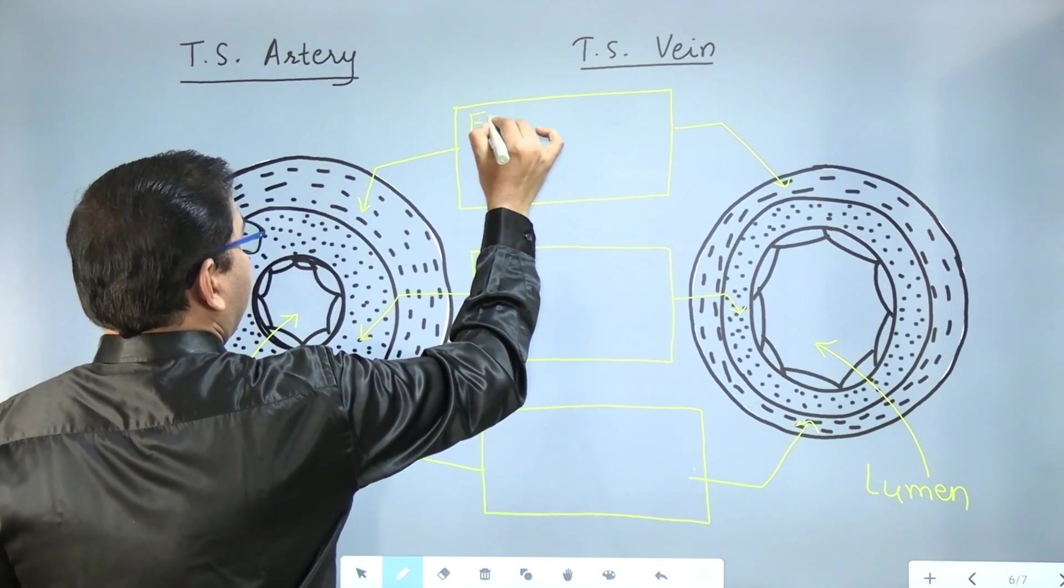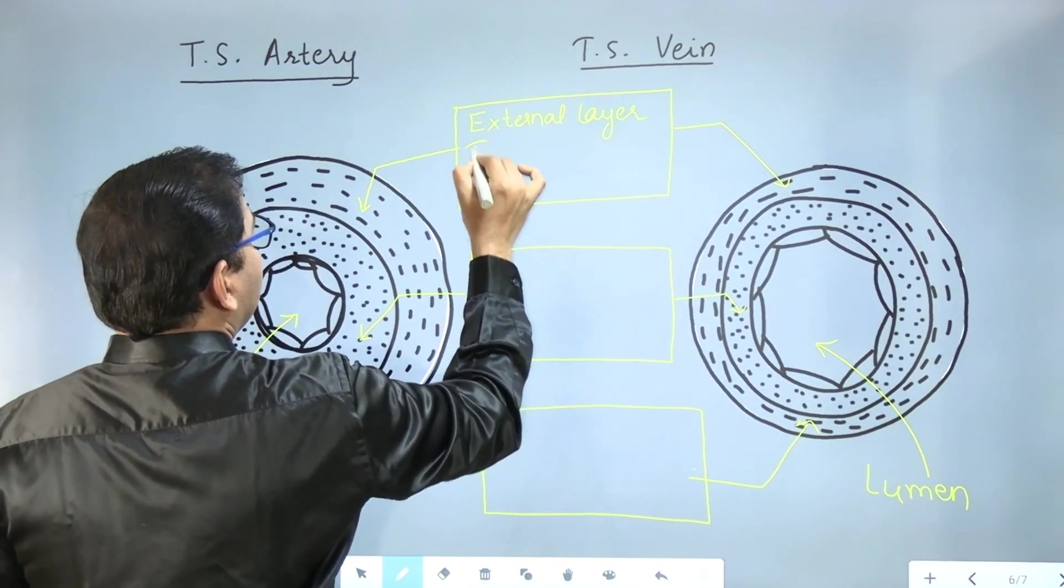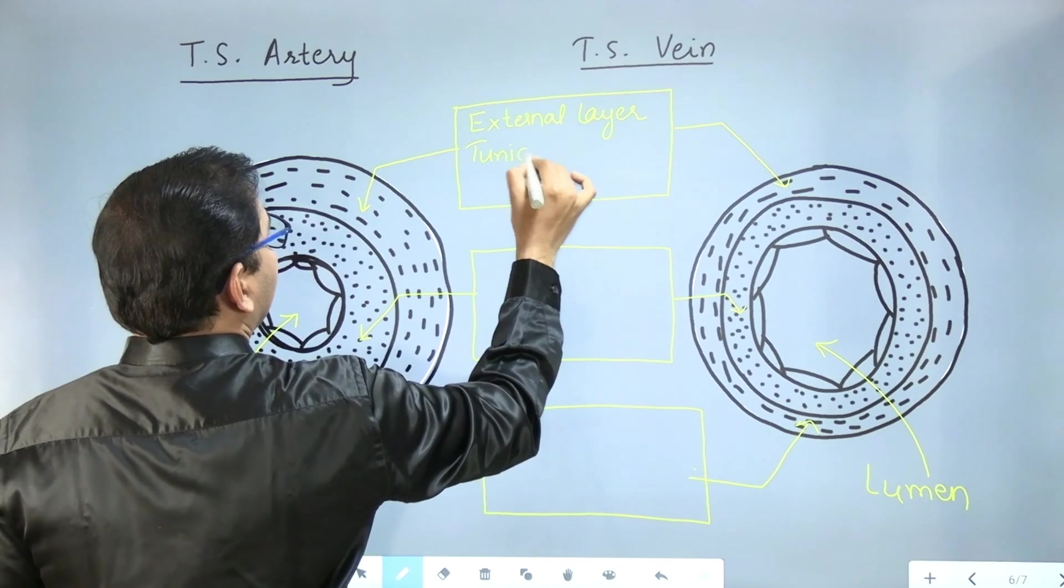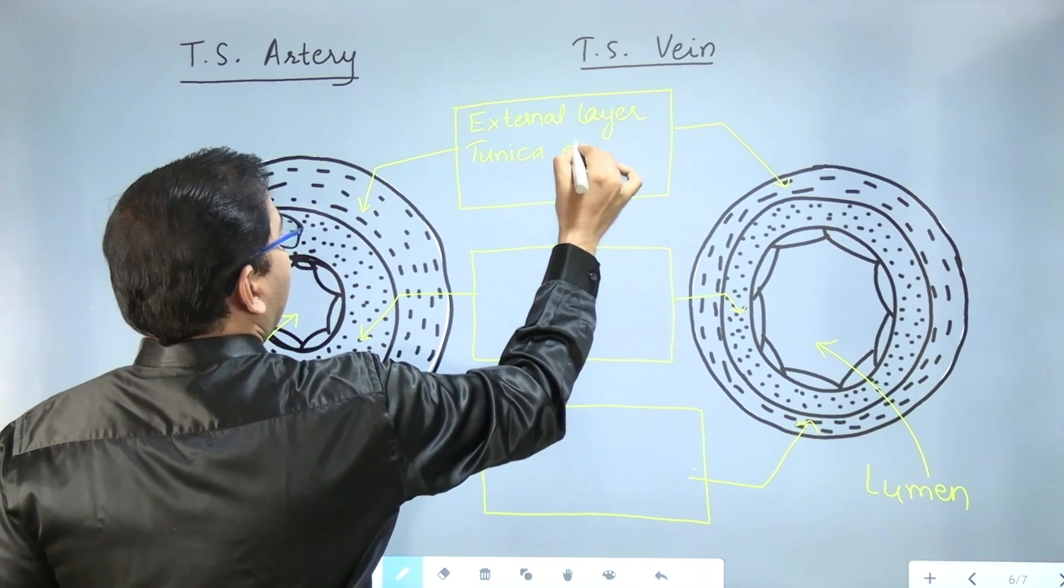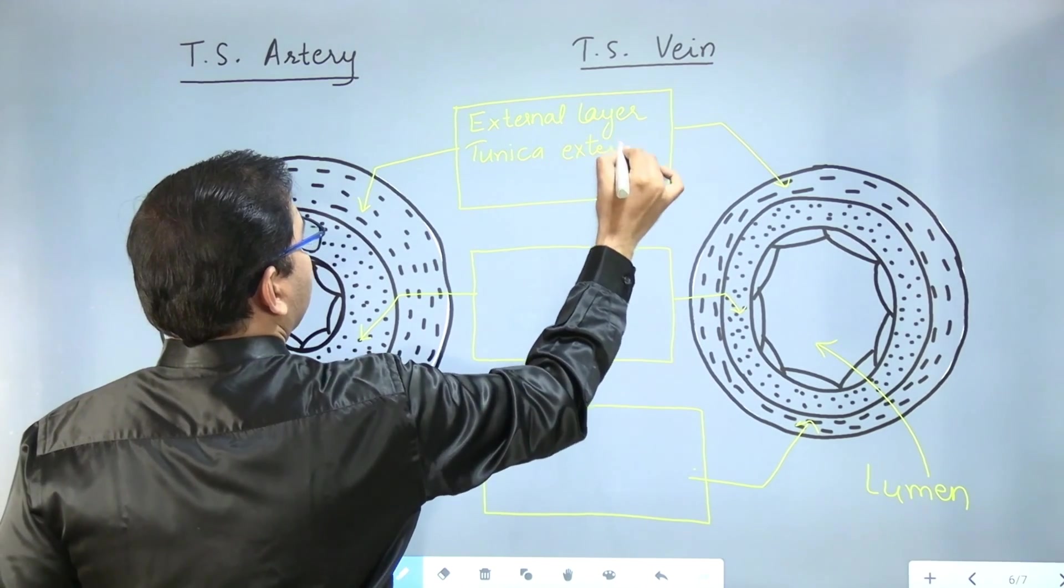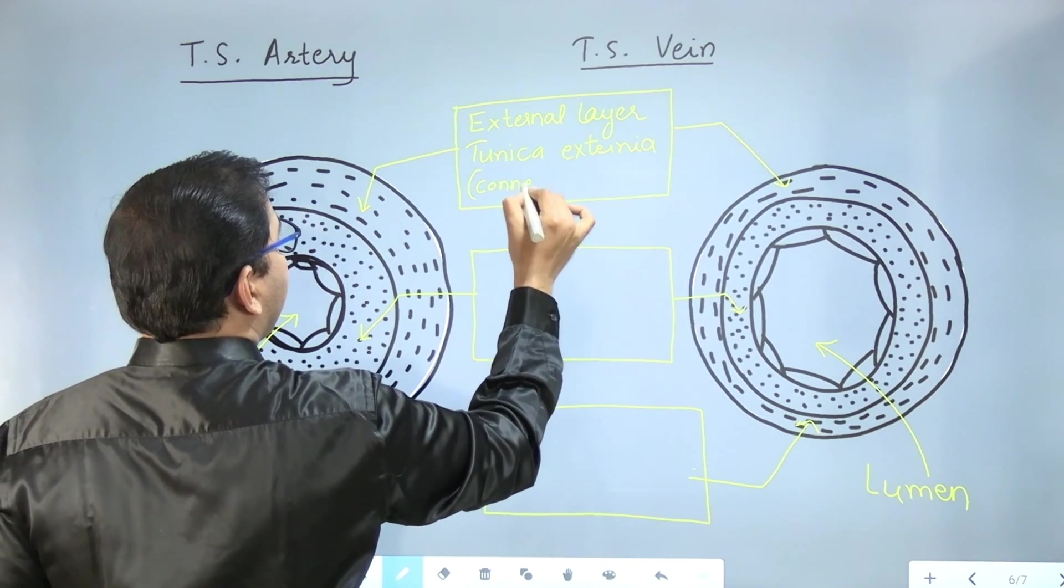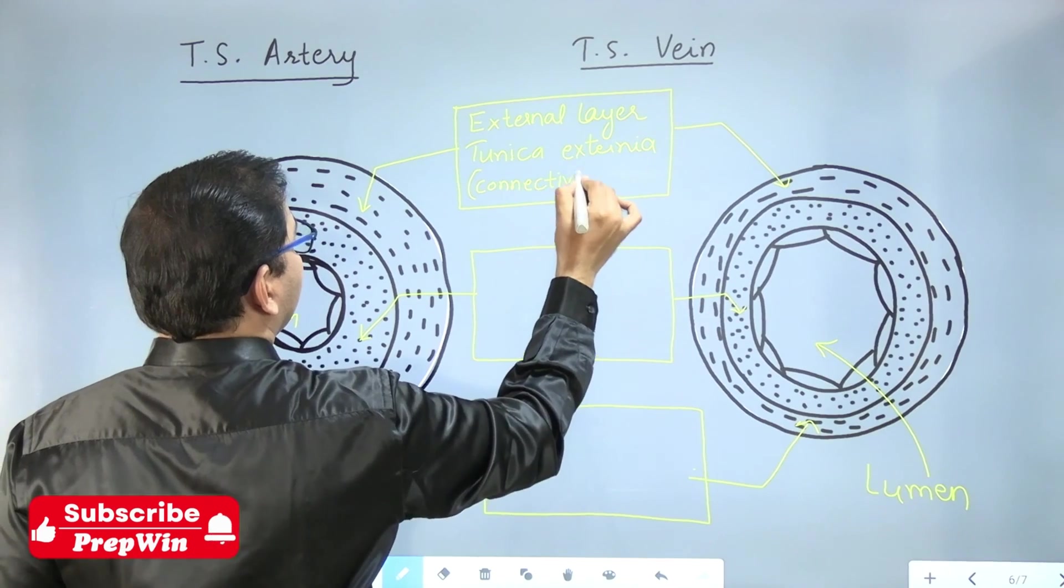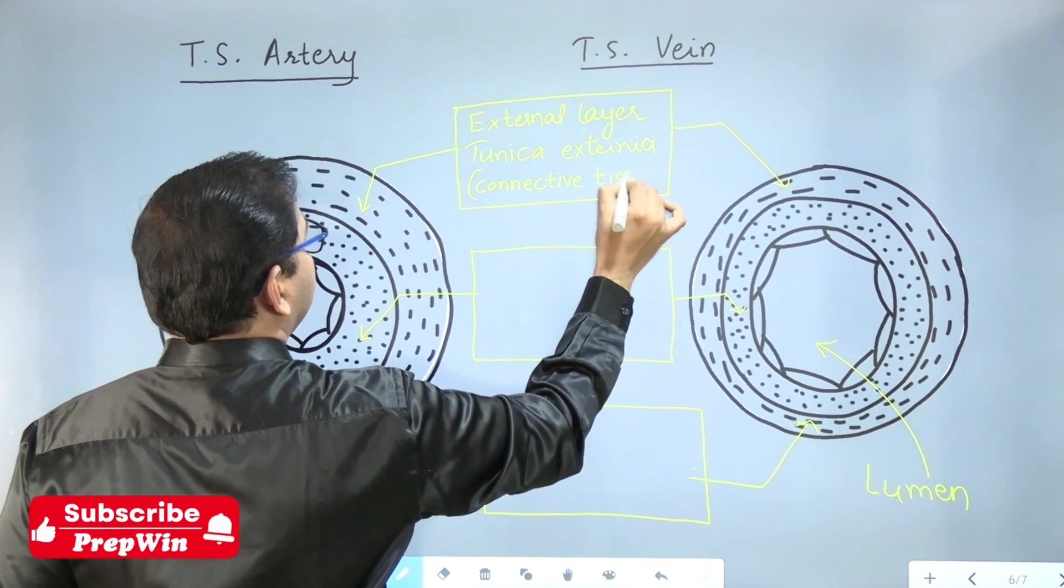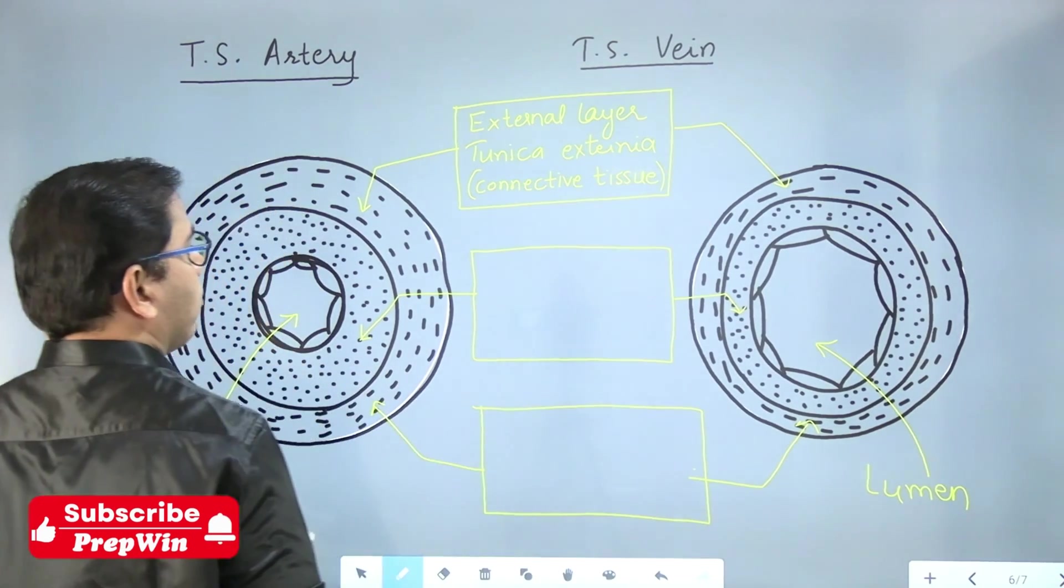The external layer, also called tunica—tunica means layer—externa. And you also have to mention that it is made up of connective tissue. If you don't mention this, you are going to lose your marks.